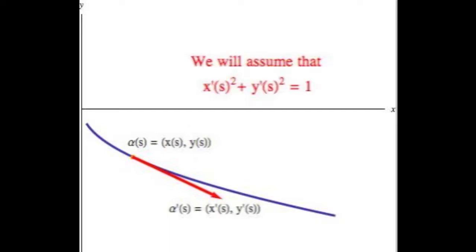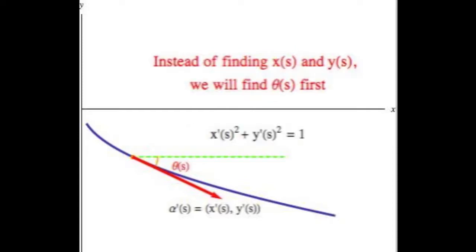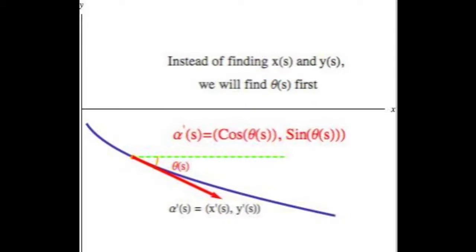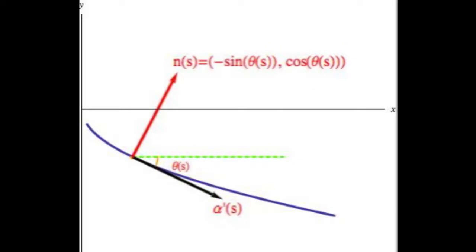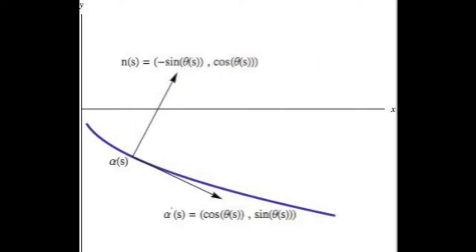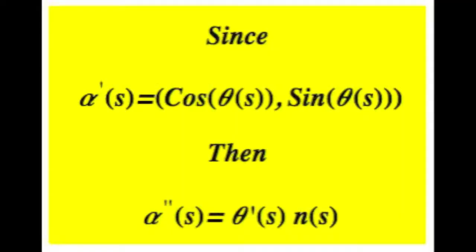We can define a function theta using the velocity vector of the curve alpha. Using the function theta, we can define the normal vector field to the curve. It is easy to see that the second derivative of alpha can be written in terms of the function theta.